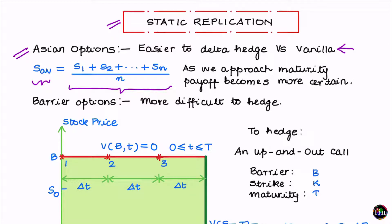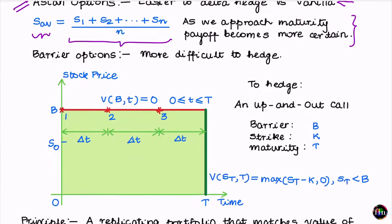As we progressively move closer to the maturity of the option, we would already have fixed quite a few stock prices in the numerator of this average. There will be fewer and fewer S's which are still unobserved and random, and hence any changes in the current stock price will progressively affect fewer and fewer terms in the numerator. Therefore, the payoff of an Asian option becomes more and more certain, making this kind of option relatively easier to risk manage.